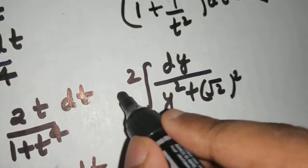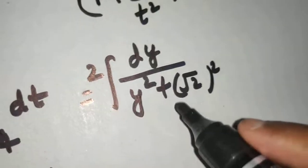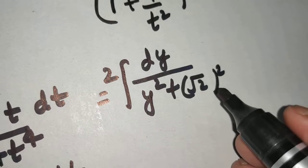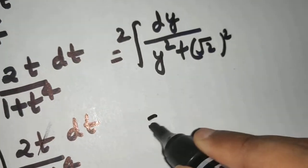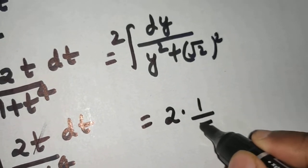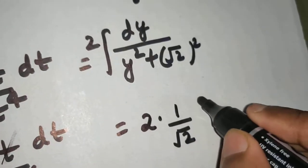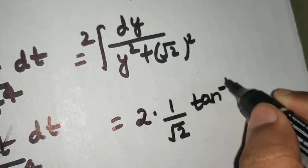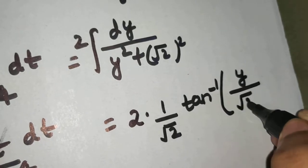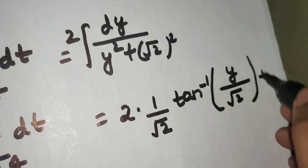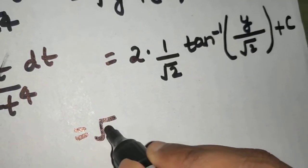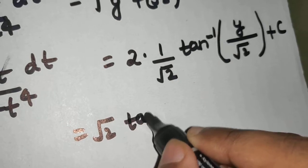Now everything is in terms of y. Remember the formula: ∫ dx / (x² + a²) = (1/a) · tan⁻¹(x/a). Using the same formula in terms of y: 2 · (1/√2) · tan⁻¹(y/√2), where a = √2.